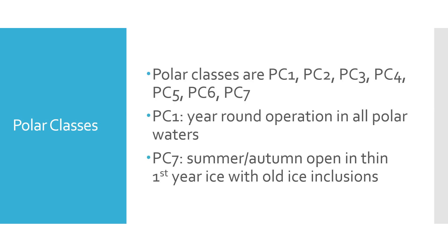Polar classes are classified as PC1 through PC7. PC1 refers to ships that can carry out year-round operation in all polar waters, whereas PC7 refers to ships that can carry out operations in summer and autumn in open thin first-year ice only, with old ice inclusions. The middle classes, PC2 through PC6, cover the range in between these two extremes.